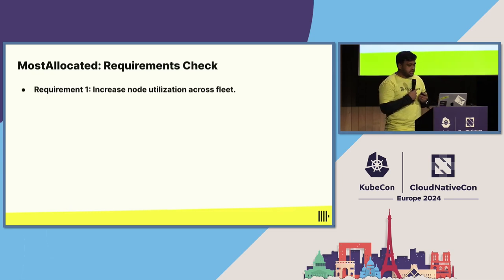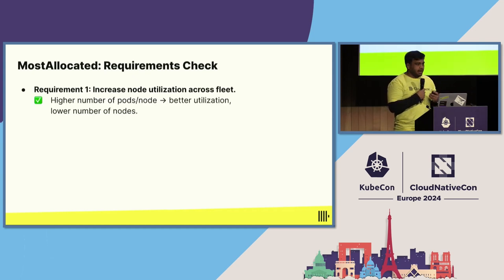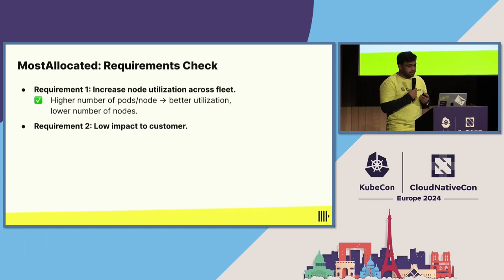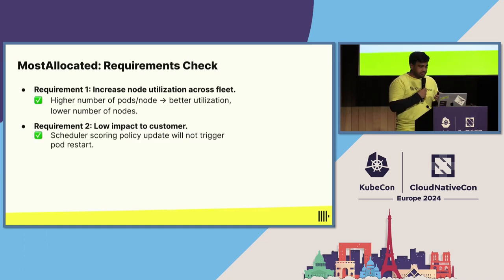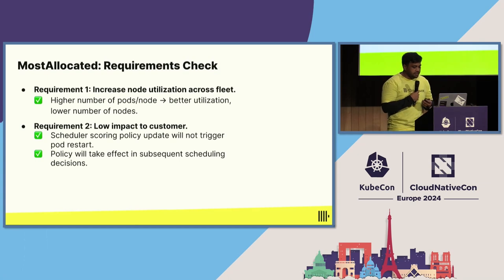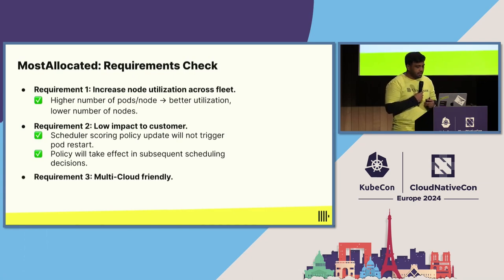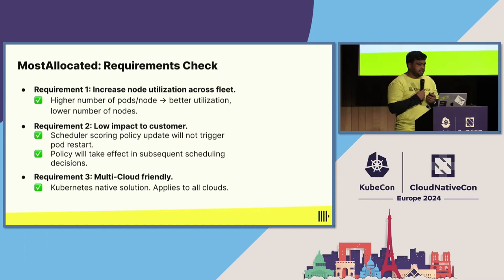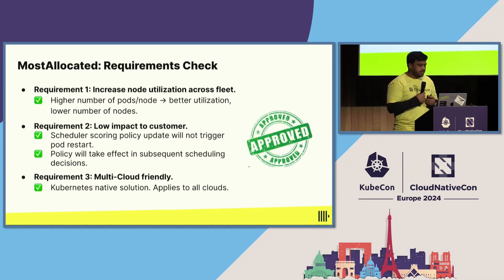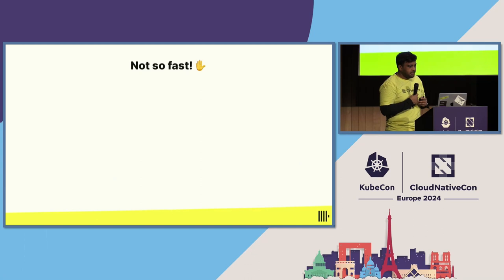Let's check if this solution satisfies all our requirements. First, by packing more pods onto fewer nodes we get better utilization. Second, updating the scheduler scoring policy does not immediately trigger a restart of all pods — only on next natural restart does the pod get scheduled onto a higher-utilization node, making it low-impact. Third, since this is a Kubernetes-native solution it applies equally to all clouds, satisfying our multi-cloud requirement. So all requirements match for this solution.